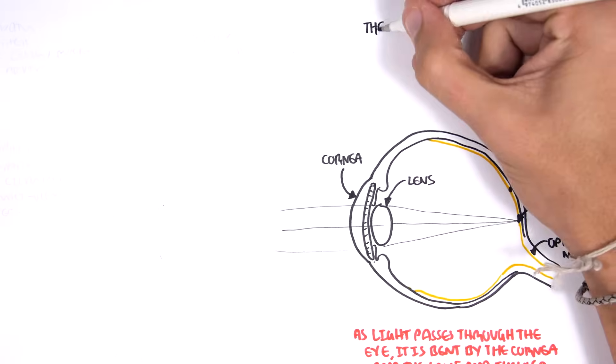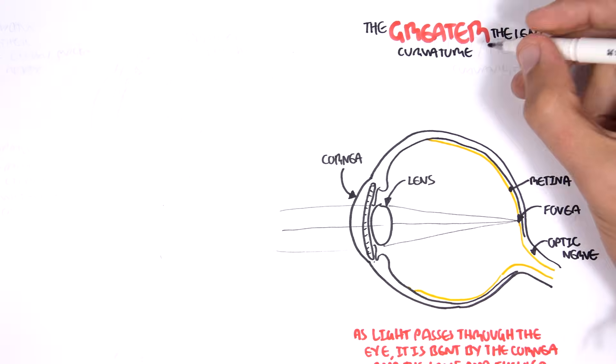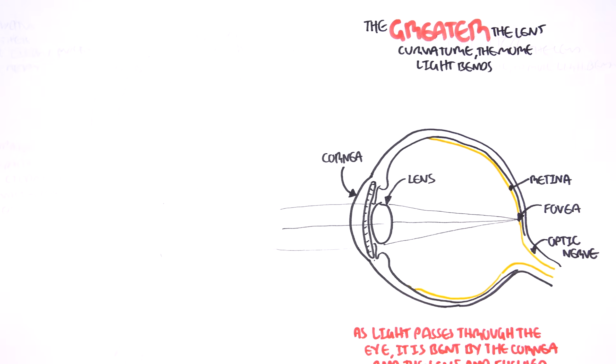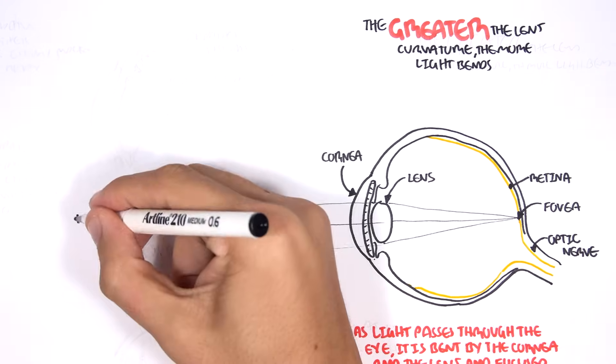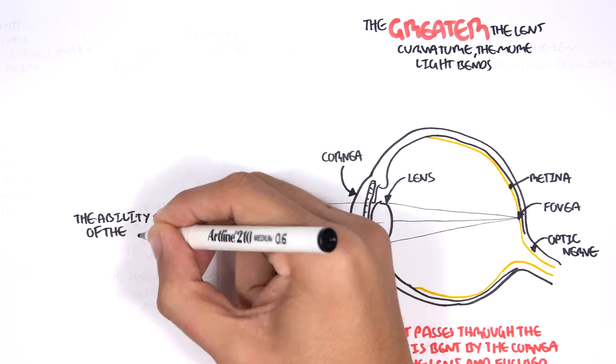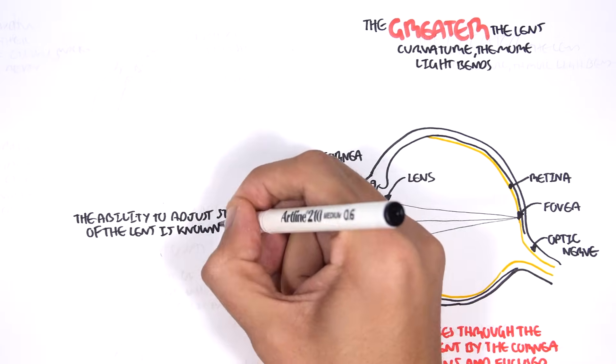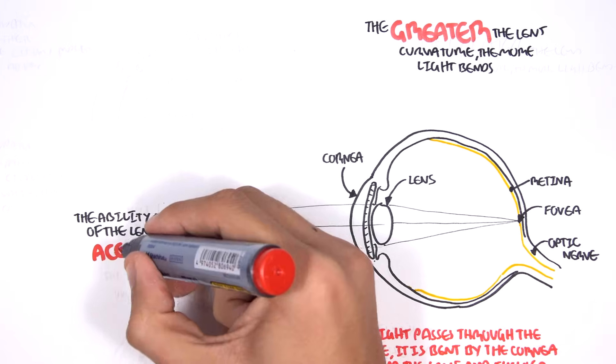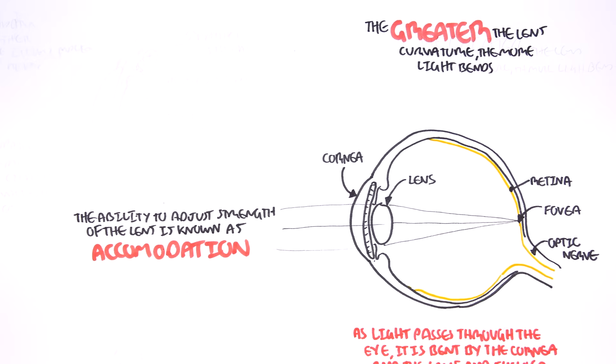The greater the lens curvature, the more light bends. The ability to adjust the strength of the lens is known as accommodation. Basically, the ability to constrict and make the lens tight is accommodation. Let us look at that now by looking at two different scenarios.